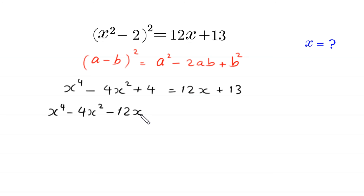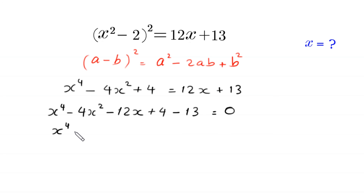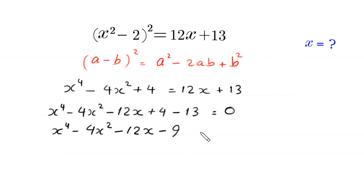Bringing everything to the left-hand side: x⁴ - 4x² - 12x + 4 - 13 = 0, which simplifies to x⁴ - 4x² - 12x - 9 = 0. Now we factorize this expression by grouping.